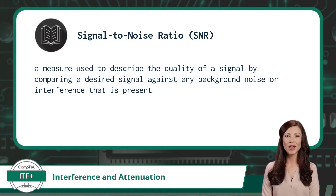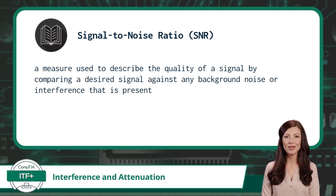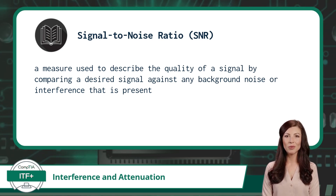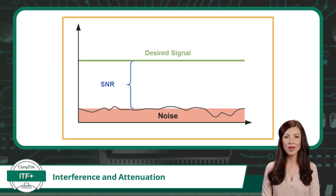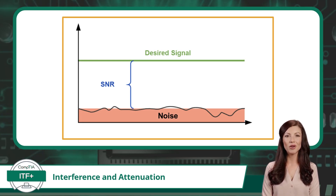Next up is signal-to-noise ratio, or SNR. Signal-to-noise ratio is a measure used to describe the quality of a signal by comparing a desired signal against any background noise or interference that is present. Imagine you're having a conversation with someone in a noisy room — the desired signal is your voice, and the noise is the background chatter and other sounds.